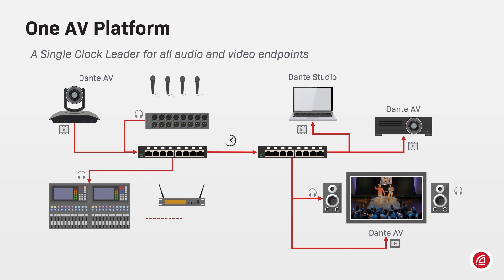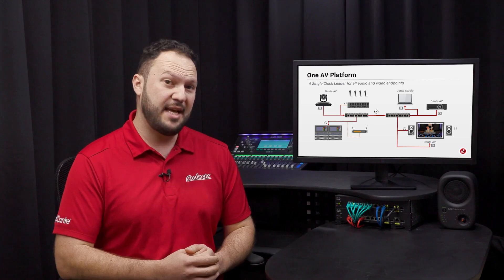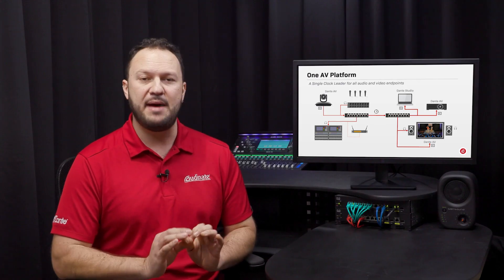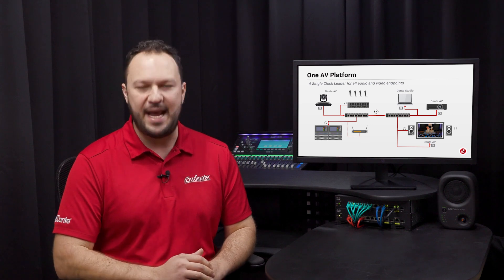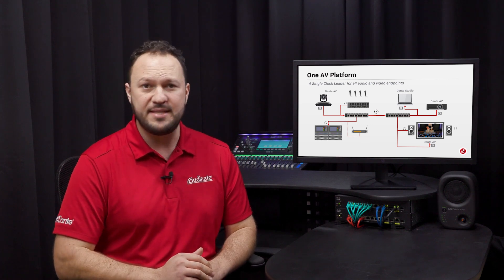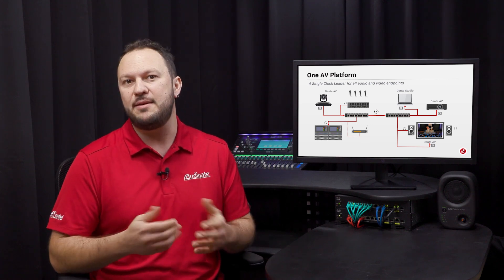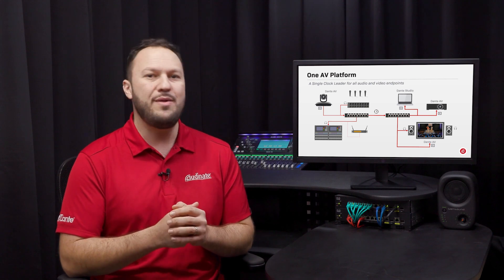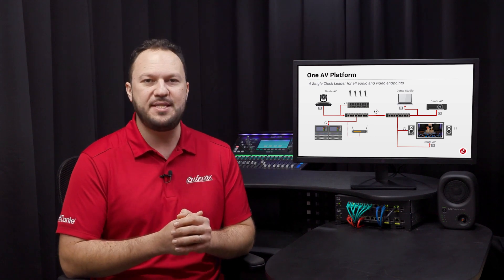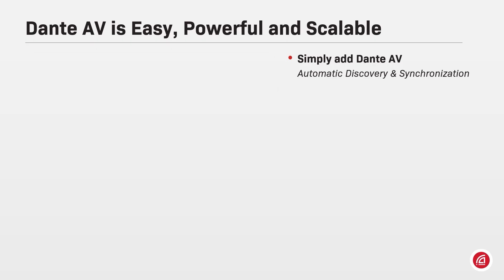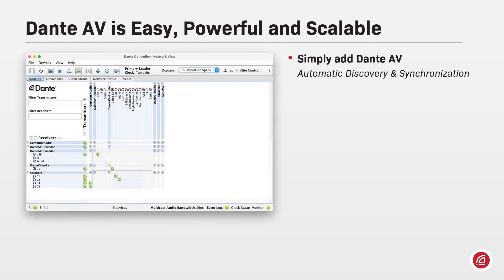Following a single clocking reference, devices can be time-aligned to match play-out of audio and video even across larger networks. Dante AV is optimized for data efficiency network requirements, working seamlessly on 1Gb networks with high-quality audio and video.